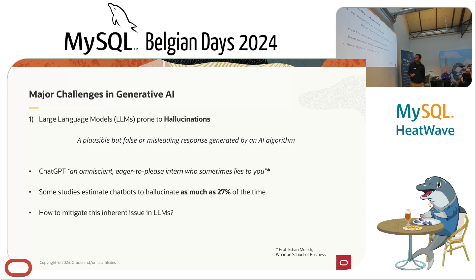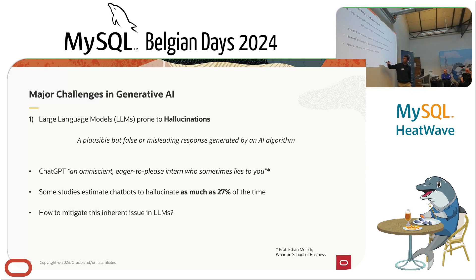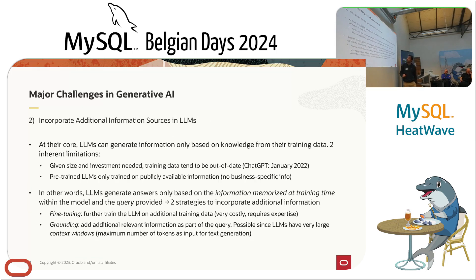Another study done on Stack Overflow found that 46% of the answers had factually incorrect things inside them. So the question is: how can we mitigate these inherent issues in LLMs? And the second issue is: how do we incorporate additional information sources in LLMs?